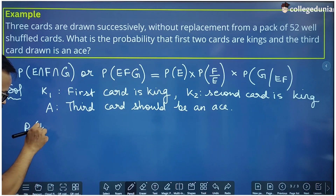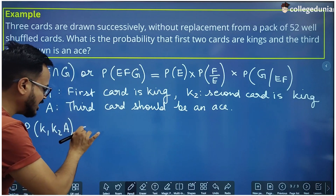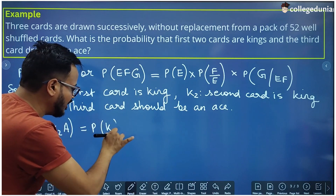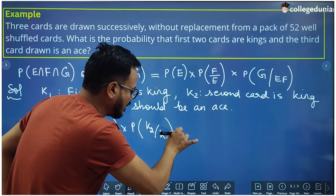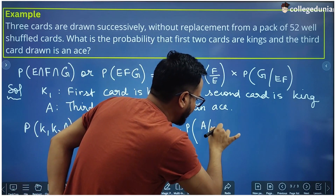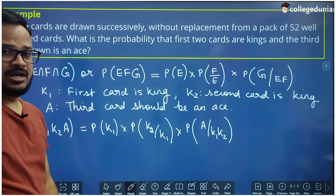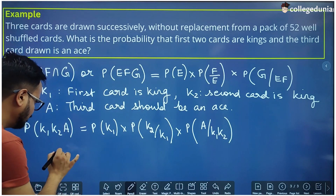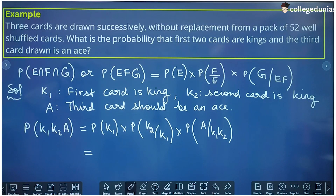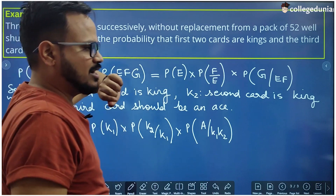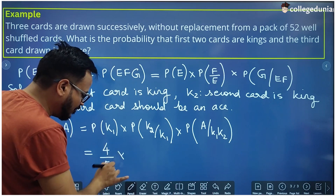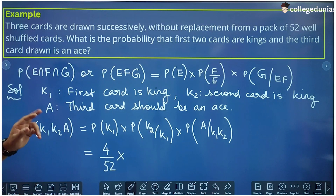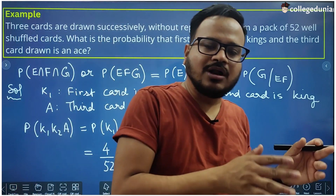We have to find P(K1∩K2∩A), which according to the formula equals P(K1) · P(K2|K1) · P(A|K1K2). What is P(K1)? There are 4 kings in a pack of 52 cards, so P(K1) = 4/52.